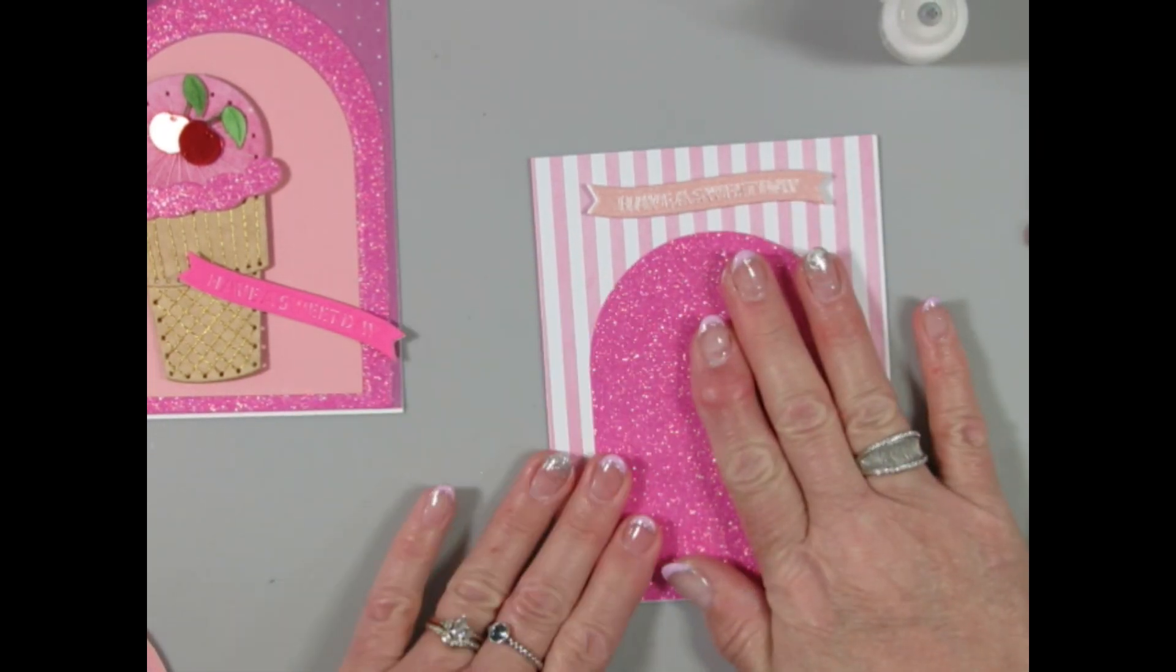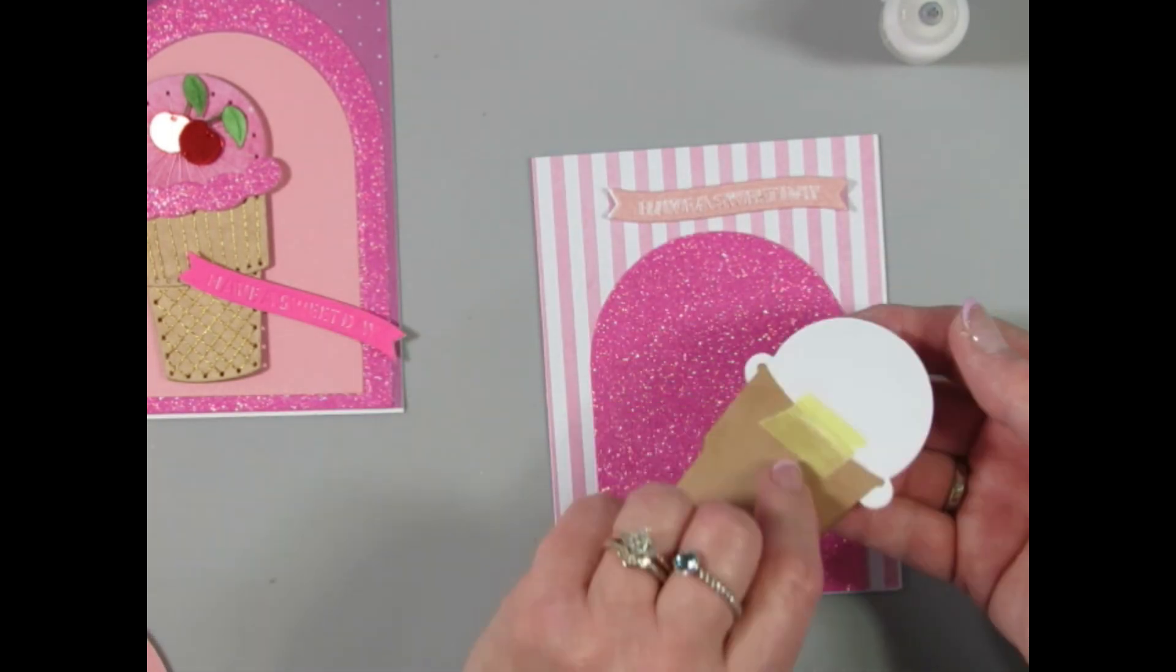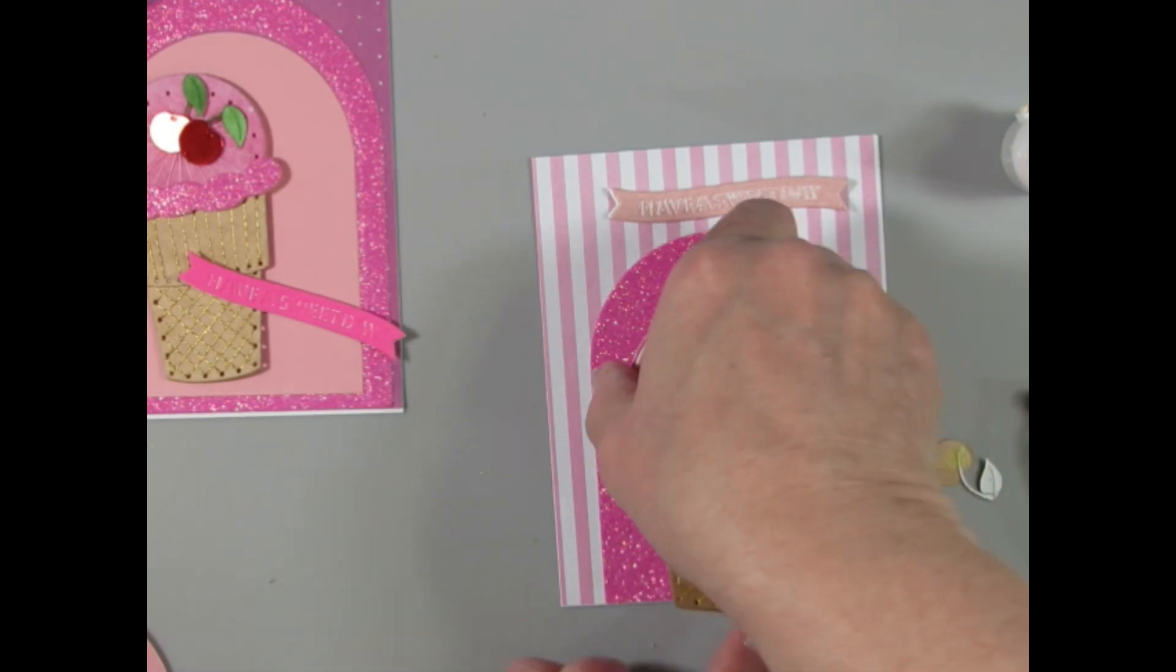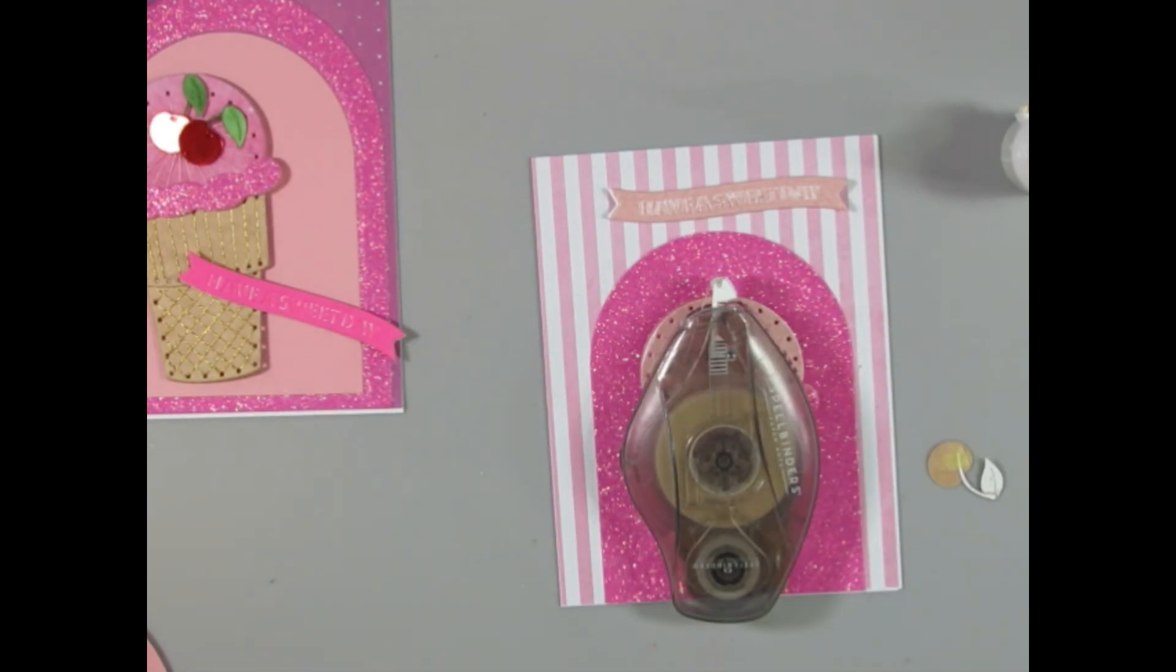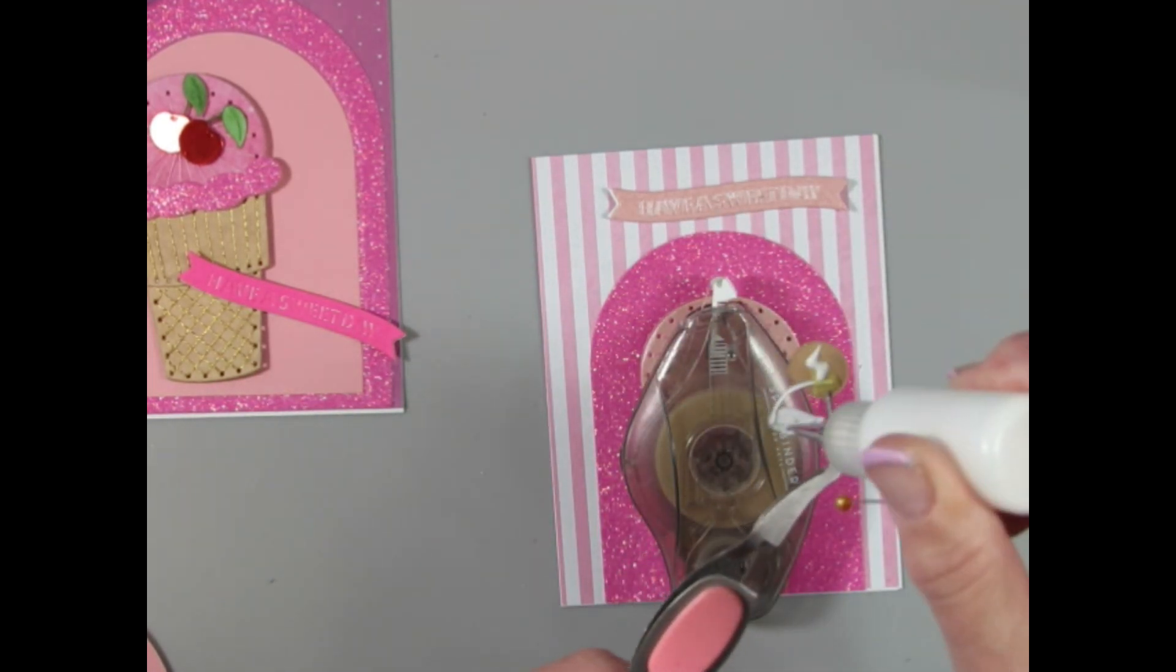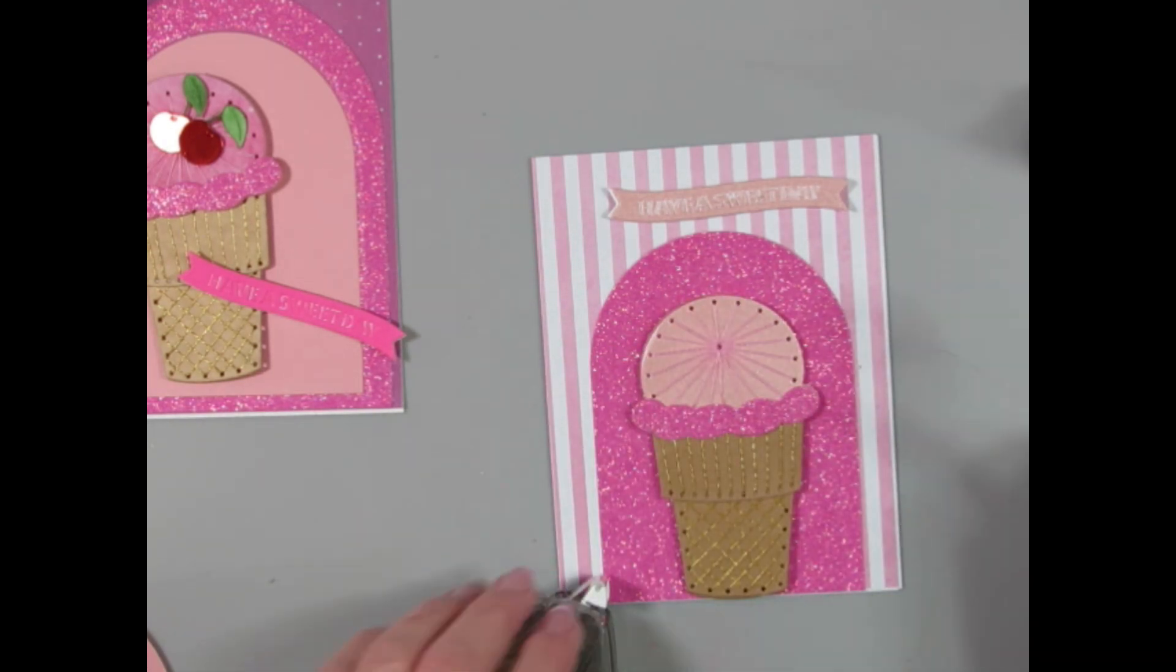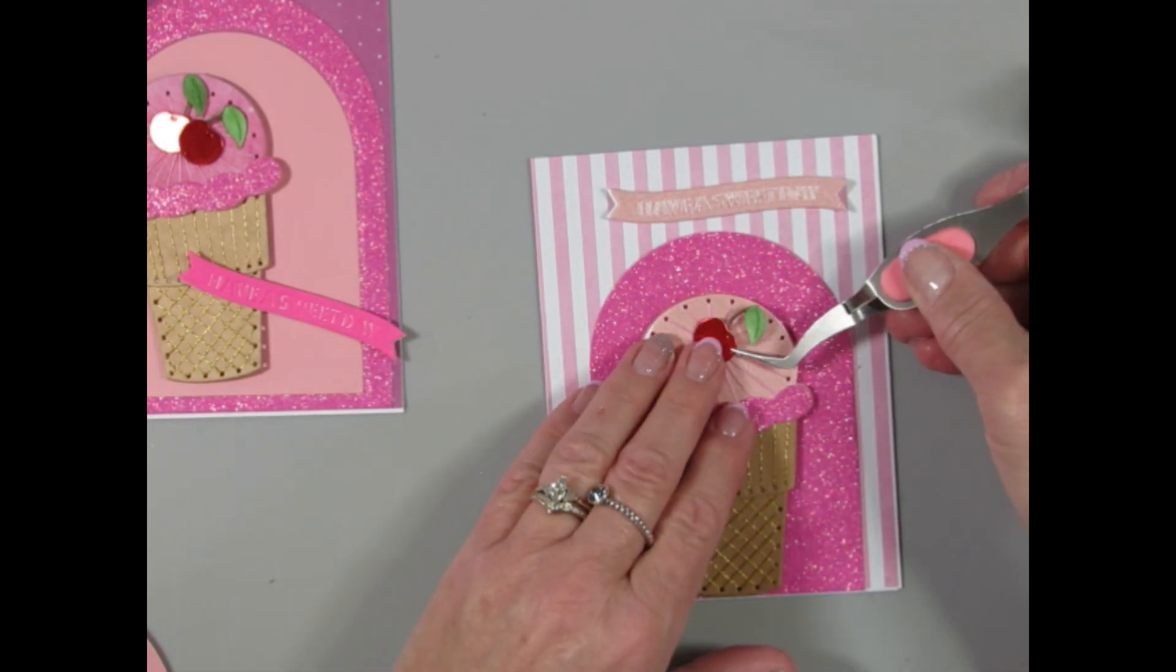And then I have a glitter arch. I've got my sentiment. Now I have my cone. Everything's coming together quite nicely. And now I just have to make sure I have this centered.